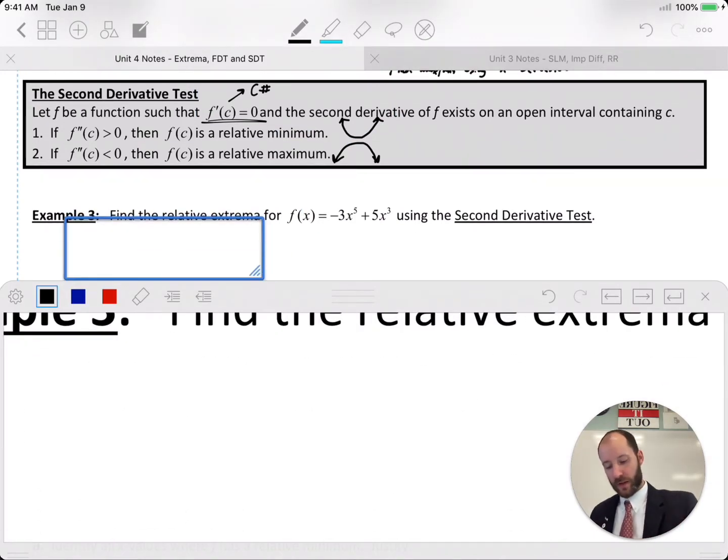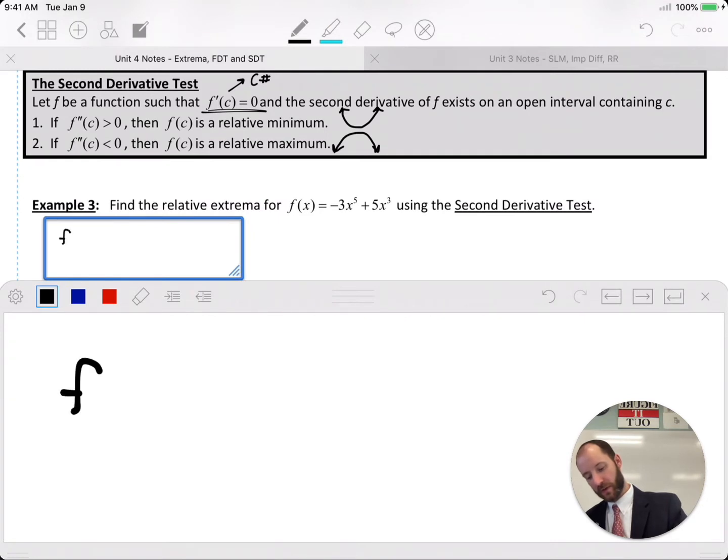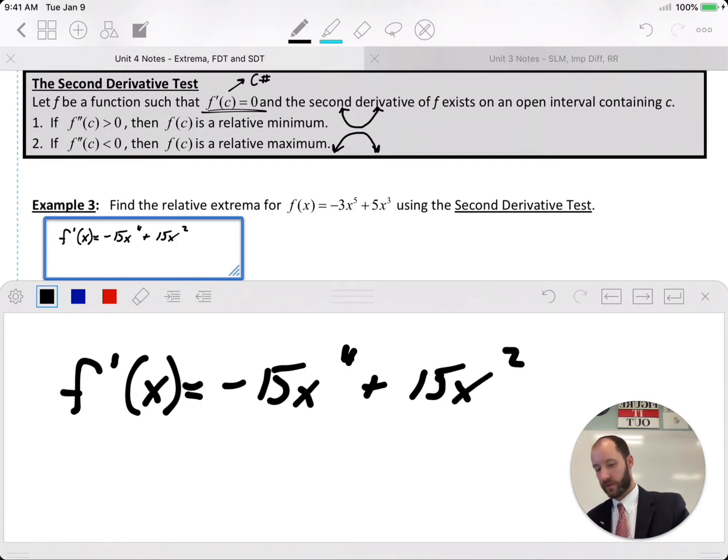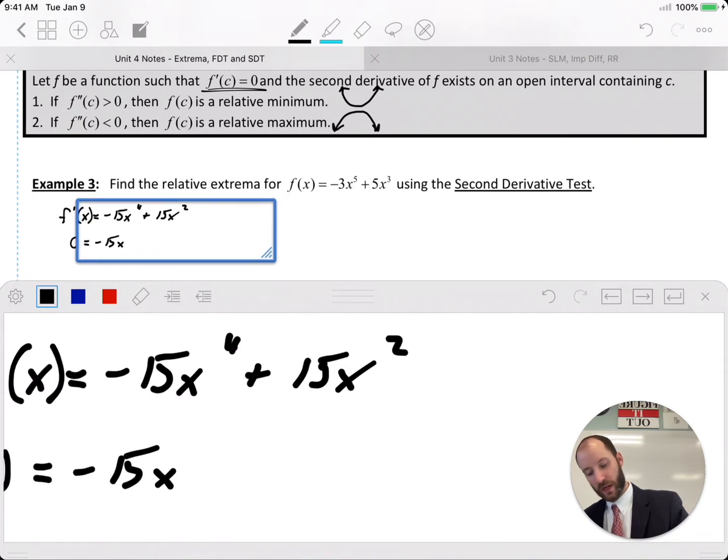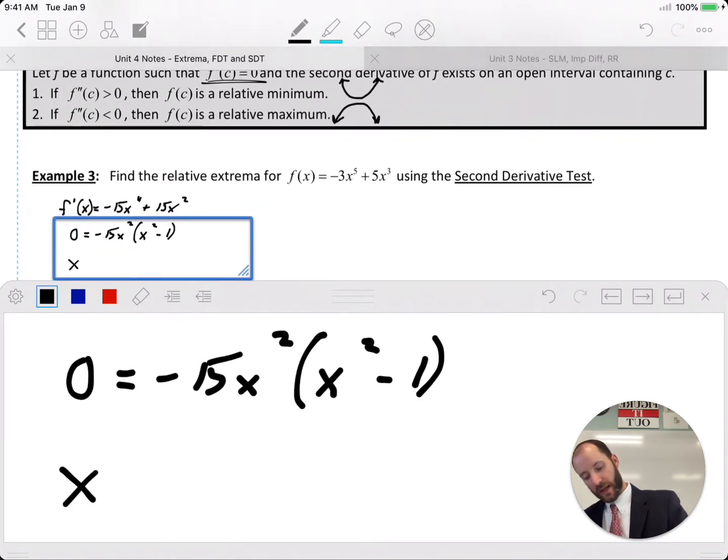So find the relative extrema for f of x using the second derivative test. Let's find our first derivative: f prime of x equals negative 15x to the fourth plus 15x squared. Set equal to zero, factor out the greatest common factor, 15x squared leaves you with x squared minus one.